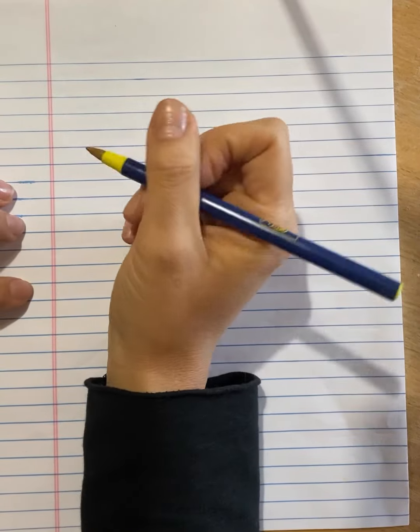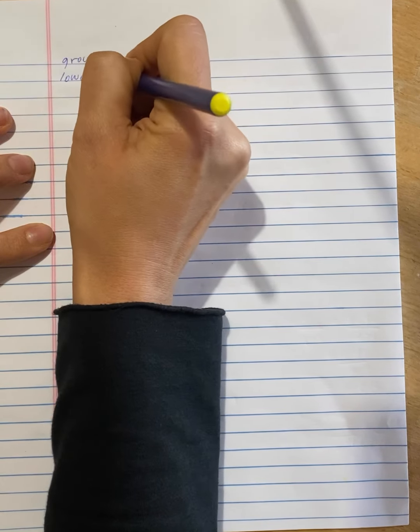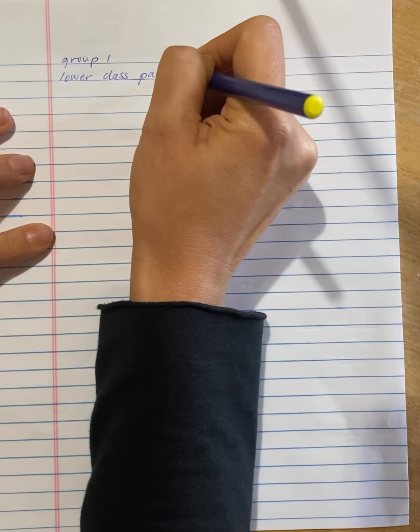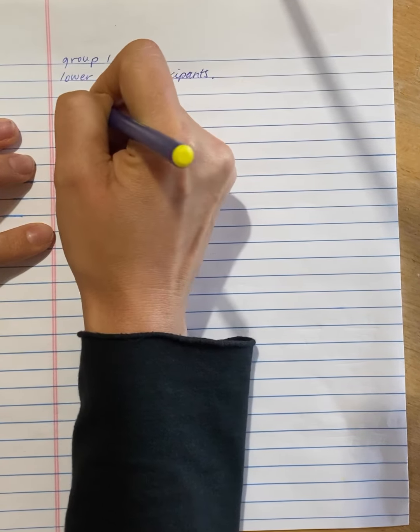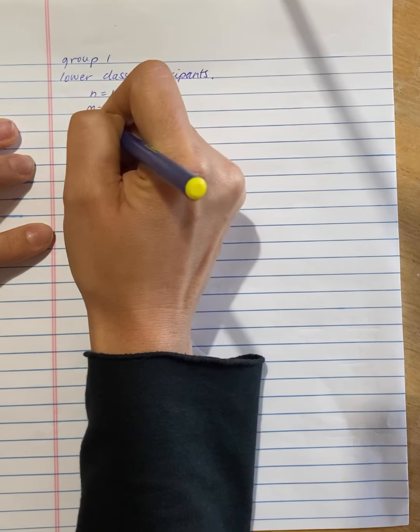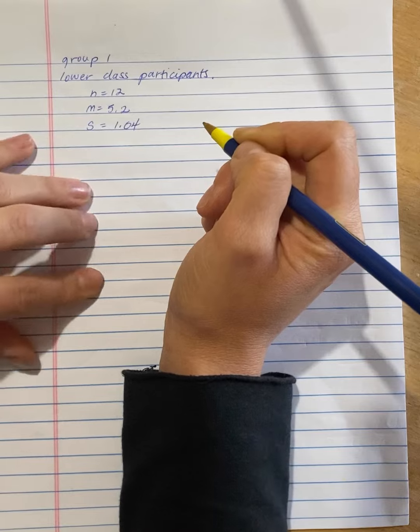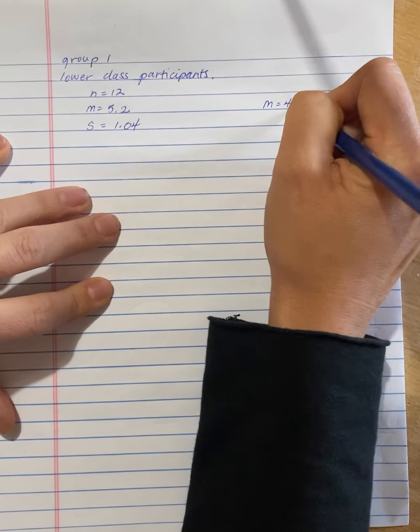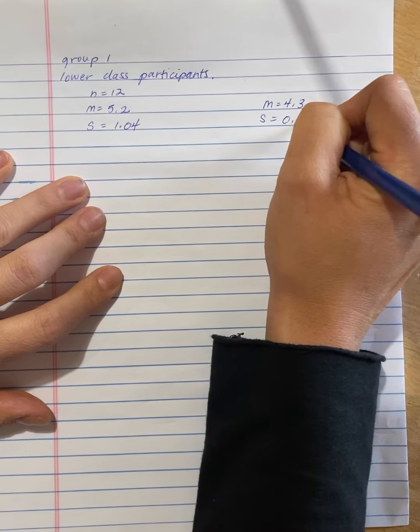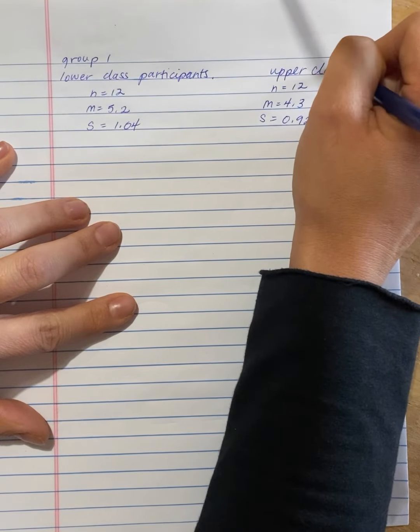Results similar to those found in the study show that n equals 12 lower class participants, so that will be our group one. Lower class participants. They had n equals 12 lower class participants shared an average of M equals 5.2 points with a standard deviation of 1.04. Compared to an average of M equals 4.3 with a standard deviation of 0.92 for the n equals 12 upper class participants.